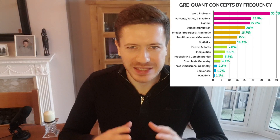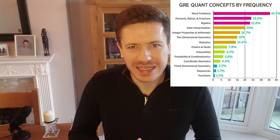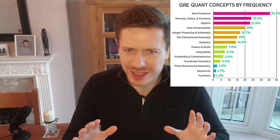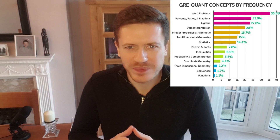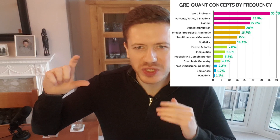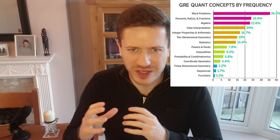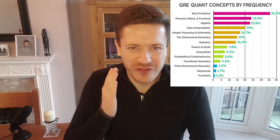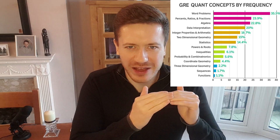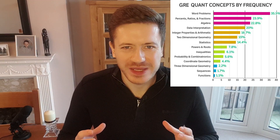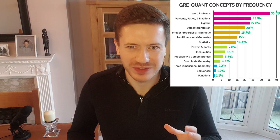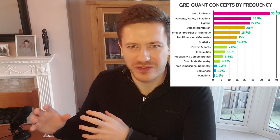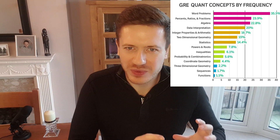For students sitting on 150 or 155 or below: you might have heard a lot about probability and combinatorics and think you're obliged to study them. But a lot of those questions only come up in the hard section, which you won't reach unless you're getting 14 out of 20 on the first section. If you're regularly getting 8 or 9 out of 20 on the first section, you might never see those harder topics. It's far better to spend your time nailing the basics to get that 14 out of 20. Of course, topics like data interpretation — a nice round 20% — are something everyone should focus on. If you're below 165, spend a bit less time on sequences and functions and a bit more time getting skillful and quick with the GRE calculator.